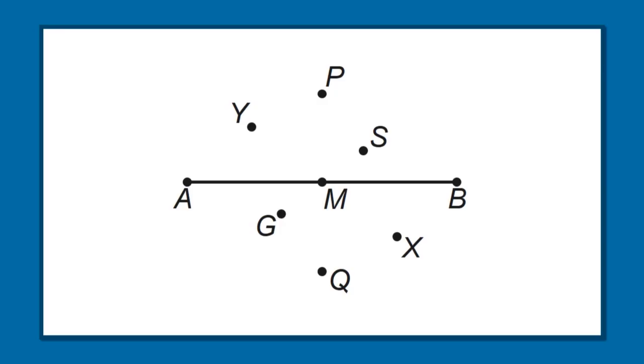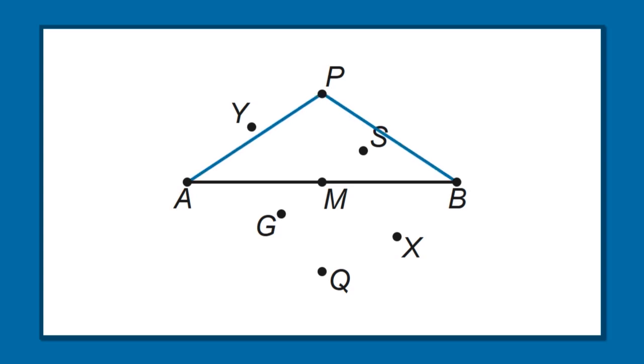One of the things we learned early in this course was the definition of a midpoint. If we're talking about a midpoint of a segment, it is the point on the segment that is equidistant from the two endpoints of the segment. There could be other points not on the segment that are also equidistant from the two endpoints. The segment is AB and the midpoint is M, but M is not the only point equidistant from both A and B. Point P is equidistant from A and B, and so too is point Q.